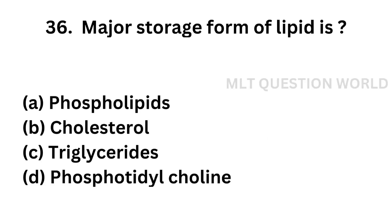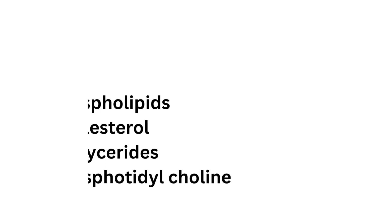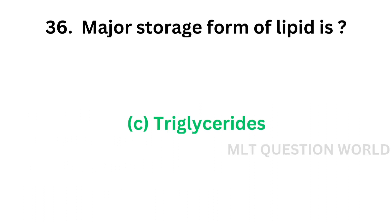Question number 36: The major storage form of lipid is — option A: phospholipids, option B: cholesterol, option C: triglycerides, option D: phosphatidic acid. The correct answer is option C, triglycerides. The major storage form of lipid is triglycerides.